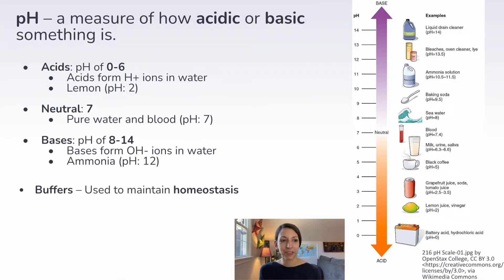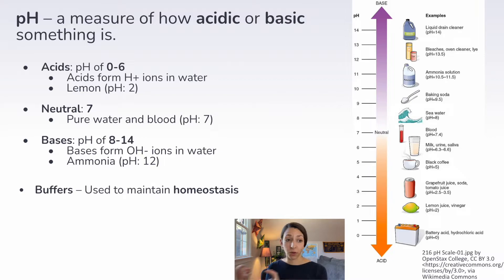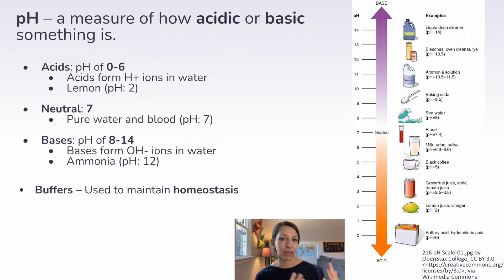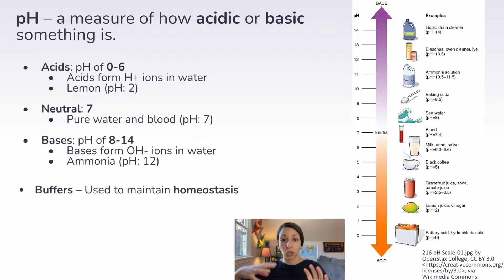pH is another chemistry concept that's important in biology — it's a measure of how acidic or basic something is. Acids have a pH ranging from 0 to 6, bases from 8 to 14, and substances with a neutral pH are right at 7, like pure water or blood. Lower values are more acidic, higher values are more basic. Buffers are used to maintain homeostasis, which is the internal balance of an organism. pH will come up even in ecology — an excess of carbon dioxide can increase the acidity of the oceans because CO2 in solution becomes carbonic acid, raising acidity with significant effects on ocean environments.